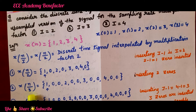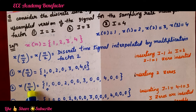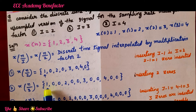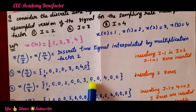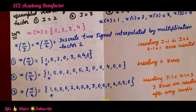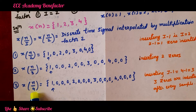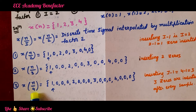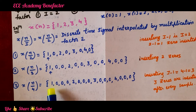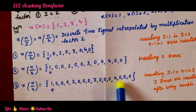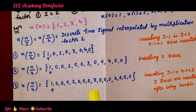When I equals 3, I minus 1 equals 2 zeros are inserted after every sample. So x(n/3) = {1, 0, 0, 2, 0, 0, 3, 0, 0, 4, 0, 0}. For I equal to 4, 4 minus 1 equals 3 zeros are inserted after every sample. So x(n/4) = {1, 0, 0, 0, 2, 0, 0, 0, 3, 0, 0, 0, 4, 0, 0, 0}.